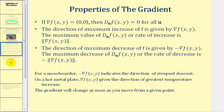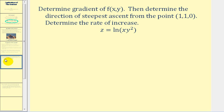Let's look at a couple of problems. Here we want to determine the gradient of f of x, y, then determine the direction of steepest ascent from the point one, one, zero, and then determine the rate of increase. The direction of steepest ascent will come from the gradient of f evaluated at the point one, one. So let's go ahead and find the gradient of f of x, y.